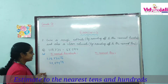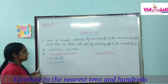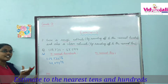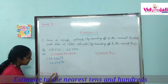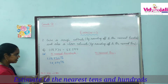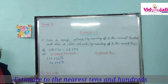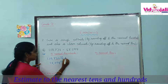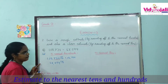First, identify the hundreds part of 1,08,734. That is 734. Now, 734 lies between 700 and 800. Check: 734 is nearer to 700. So we replace 734 with 700, and the remaining part 1,08,000 stays the same. So the rounded number is 1,08,700.